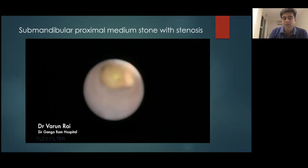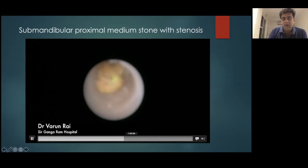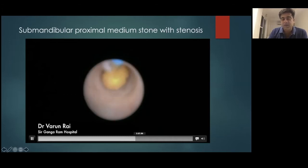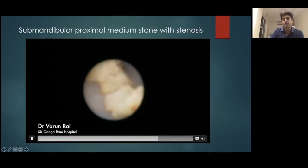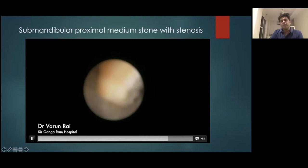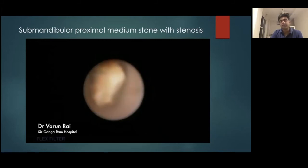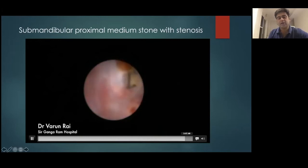We can use the Holmium laser, which is a fragmentation tool where we break the stone into smaller fragments. The idea is to fragment the stone into pieces smaller than the narrowest part of the duct so you can easily basket them out. After fragmentation, the stone is converted to almost a horseshoe shape, and a few minutes later it's broken down into three fragments, which are then extracted using the basket. At the end of the procedure, you have a nice normal-looking duct with no retained debris, and the last piece just needs a slight tug.